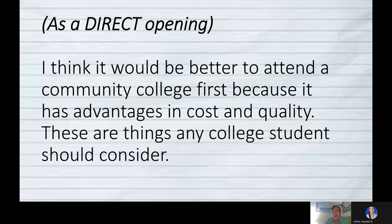So as a direct opening, and this is the sentence we actually composed on screen in the last lesson, I think it would be better to attend a community college first because it has advantages in cost and quality. These are things any college student should consider. Neither of those is a complex sentence. The first one previews a couple of points I'm going to make in the rest of the essay. And the second sentence, I kind of get students to think, oh, I should listen to this because you're telling me these are things students ought to consider. So I'm kind of hooking my audience a little bit. Not a big paragraph, not a tremendous amount of detail, but it definitely says what my position is and tells my reader why they ought to pay attention.